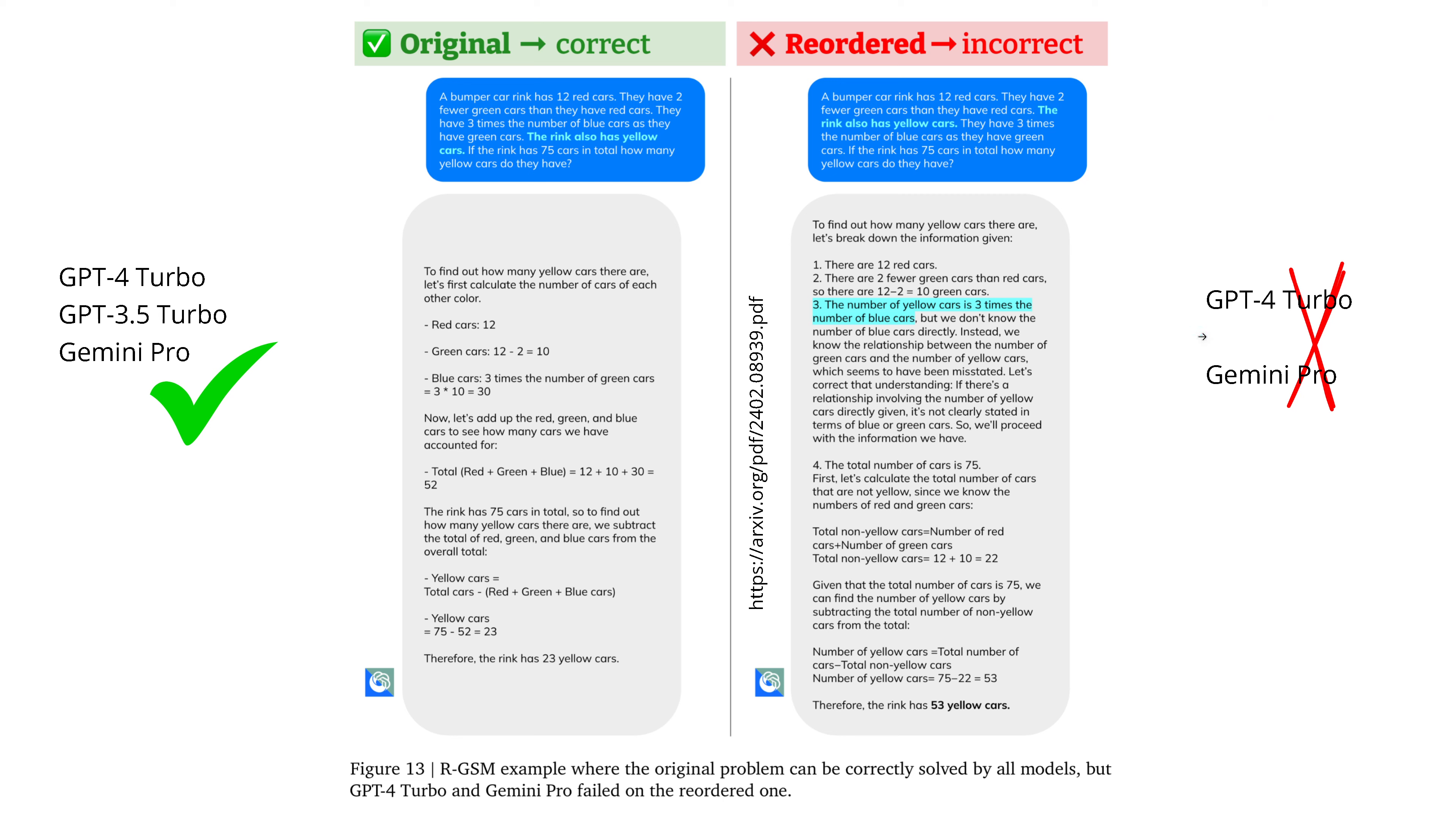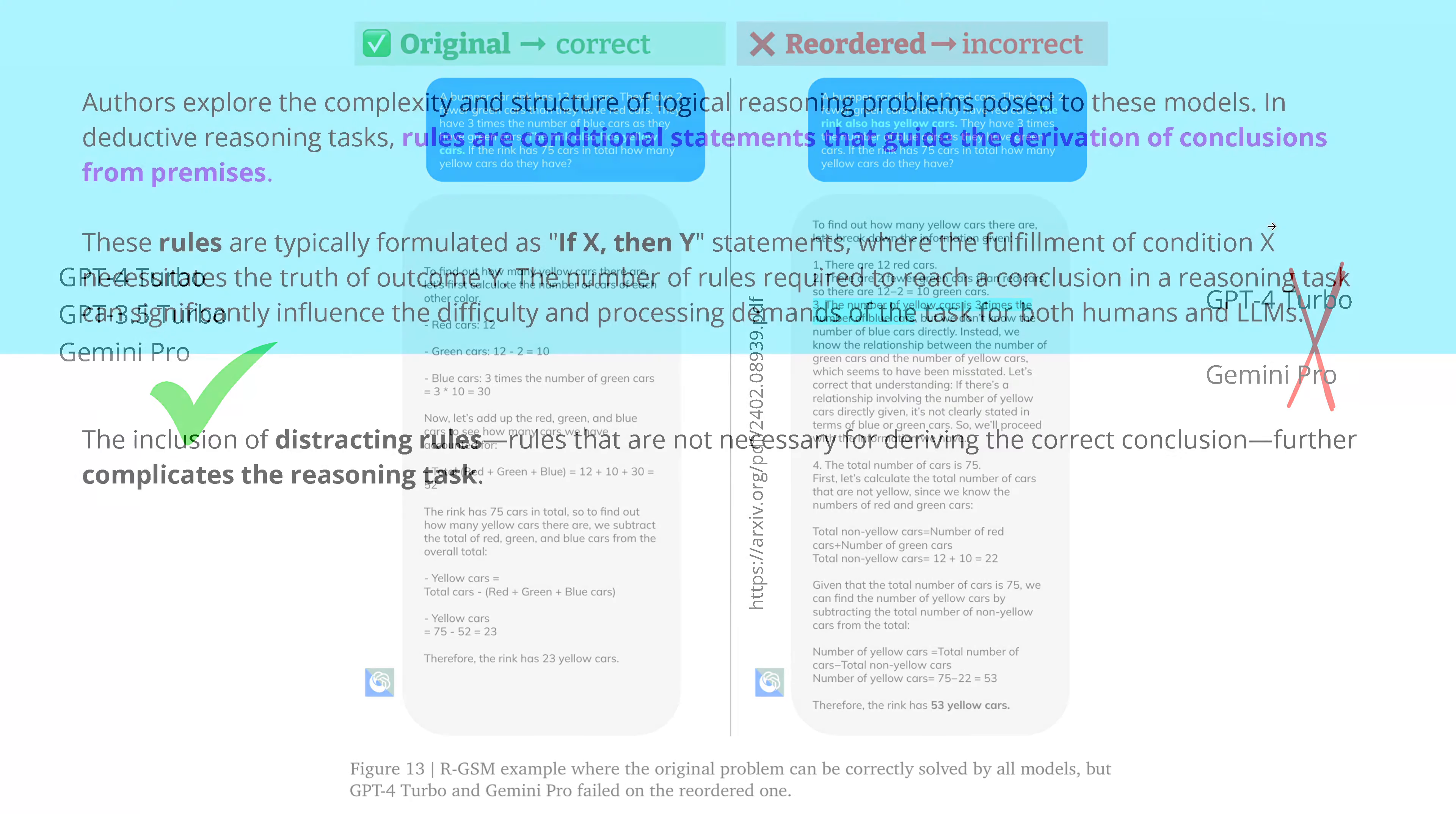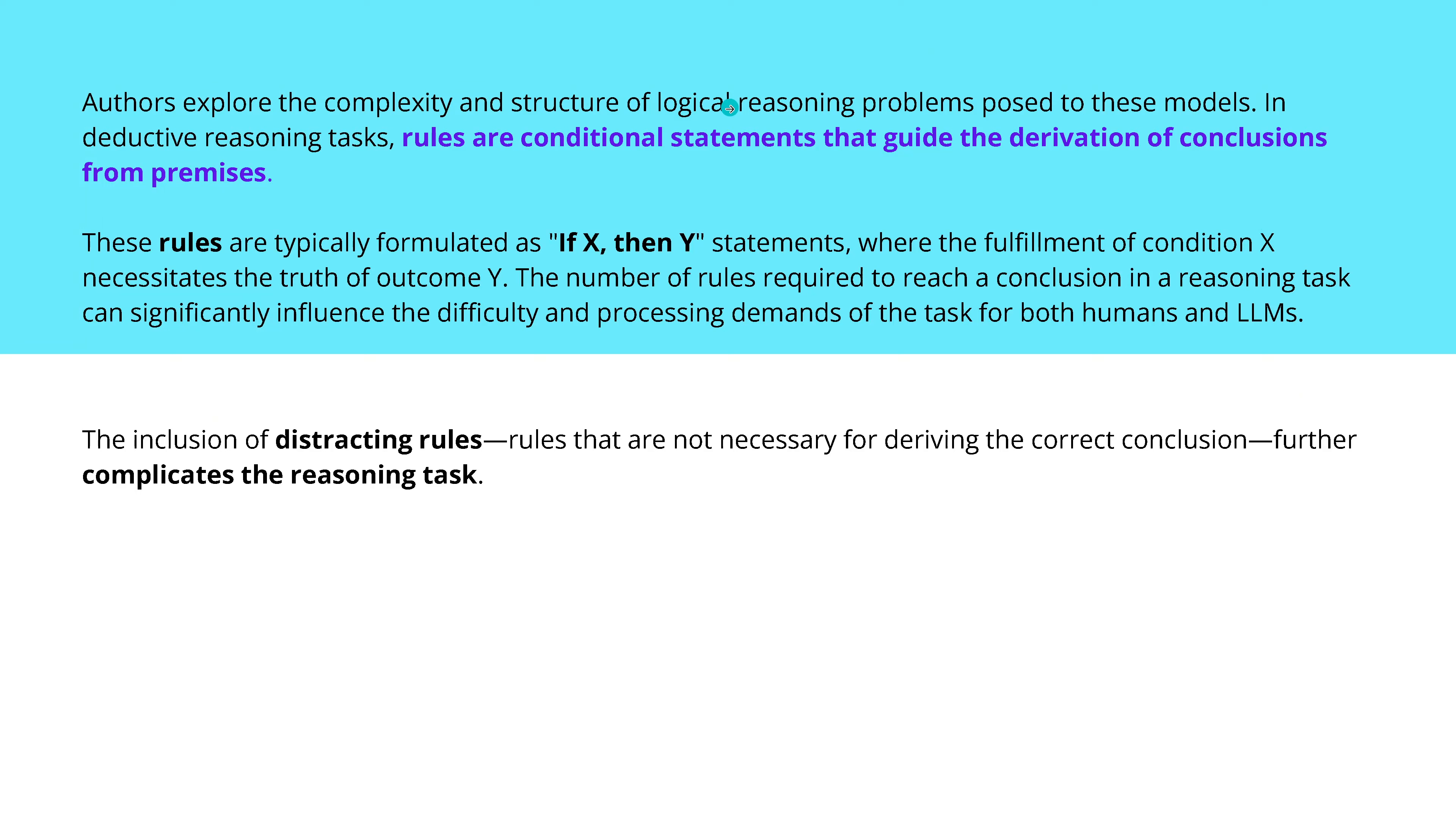That the linear order you give to a system to find a logical reasoning path forward, if you interrupt the path by just one sentence, the system failed. And I mean not just any system. GPT-4 Turbo and Gemini Pro, one of the most, in quotation marks, intelligent systems we have on this planet. So those authors explore here the complexity and structure of logical reasoning problems. And for a deductive reasoning task they say, rules are conditional statements that we use to guide the derivation of conclusions from premises.